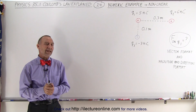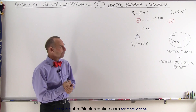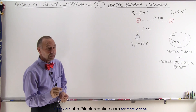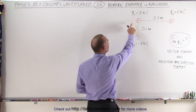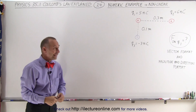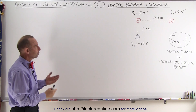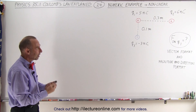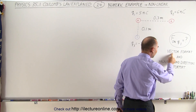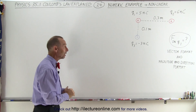Welcome to our lecture online. Now let's do a non-linear example of Coulomb's Law. We have three charges: two positive charges and one negative charge, and we're trying to find the force on Q1 due to the presence of Q2 and Q3. We're going to find that force on Q1 both in the vector format and magnitude and direction format, so we're going to do it basically twice.